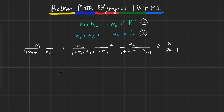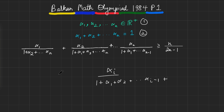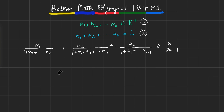The problem says: if you have α₁, α₂, all the way up to αₙ in positive reals such that they all sum up to one (condition one), prove that the sum of αᵢ over 1 plus all the other αⱼ (i.e., all alphas except αᵢ) is greater than or equal to n over 2n minus 1.